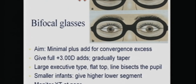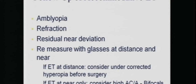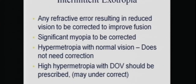Bifocal glasses, normally given to adults, are used for children especially when looking for a convergence excess pattern — a +4.00 Add or +3.00 Add is given, which can be gradually tapered. The large executive type with the line bisecting the pupil is used so that the moment the child's visual axis falls below the primary position, they are looking through the near segment. Follow-up monitors accommodative esotropia, amblyopia, refraction, residual deviations, and re-measurement at distance and near. For intermittent divergent squints, a good high-quality image is the most important stimulus for control, so myopes require optical correction.